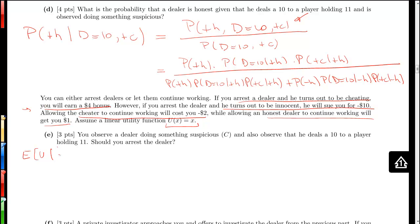Utility when we do arrest. It's equal to the probability that we have a dishonest dealer, given that we found something suspicious and we found a deal of 10. We get a $4 bonus. Plus the probability that it's an honest dealer, given that we found something suspicious and a 10 was dealt, times the payoff for arresting an honest dealer.